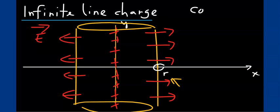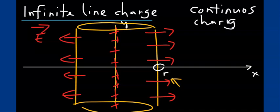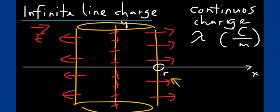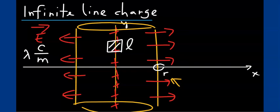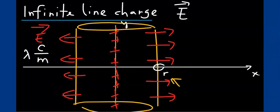This is what we call a continuous charge distribution. We have to assign a quantity called the linear charge density, lambda, which has units of coulombs per meter. It tells you how much charge is contained within a certain length of that line charge. Within a length L, the amount of charge is lambda times L. If we take the distribution of charge along this line to be uniform, then lambda is a constant. Let's apply Gauss's law to determine the field.